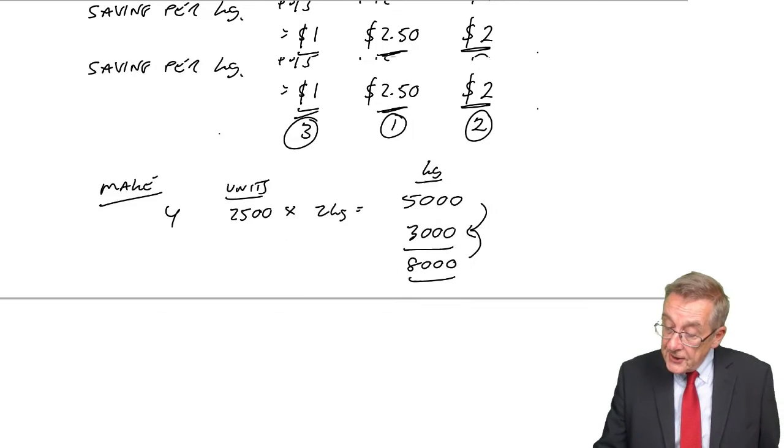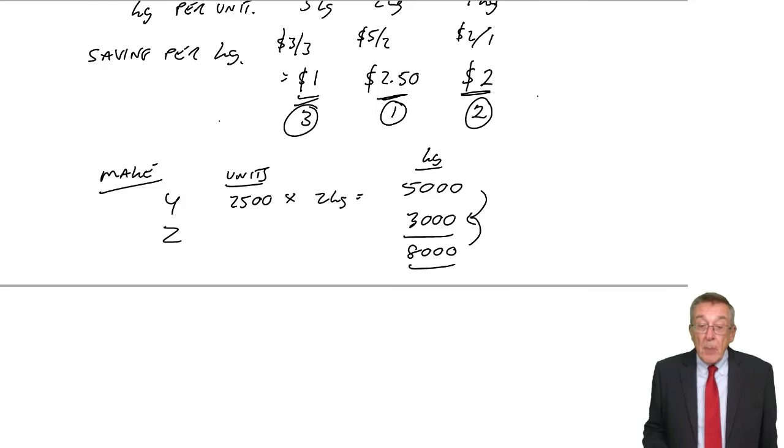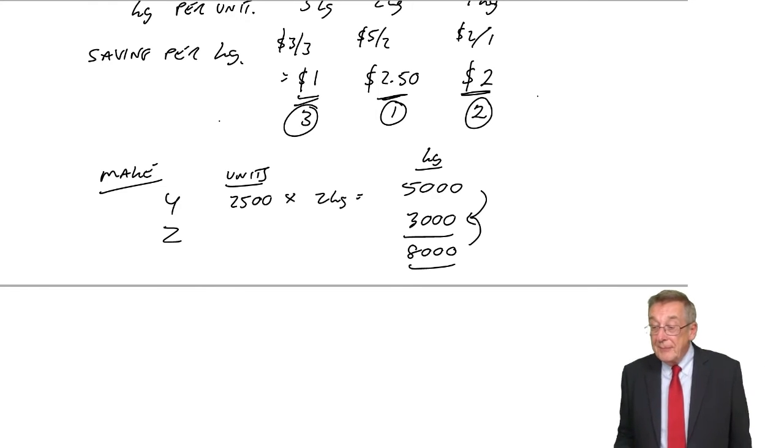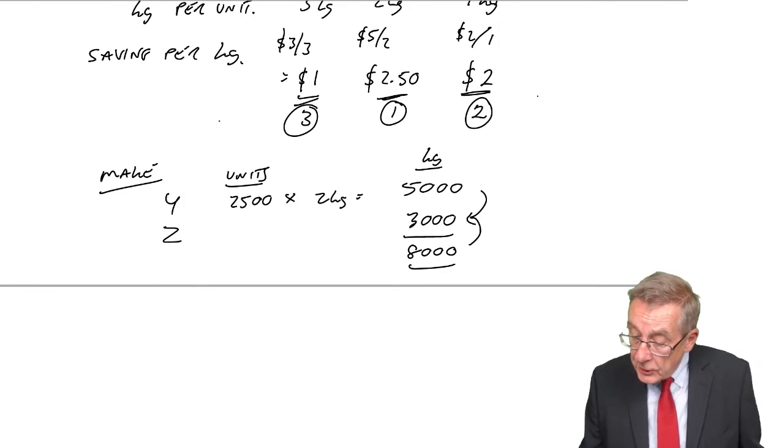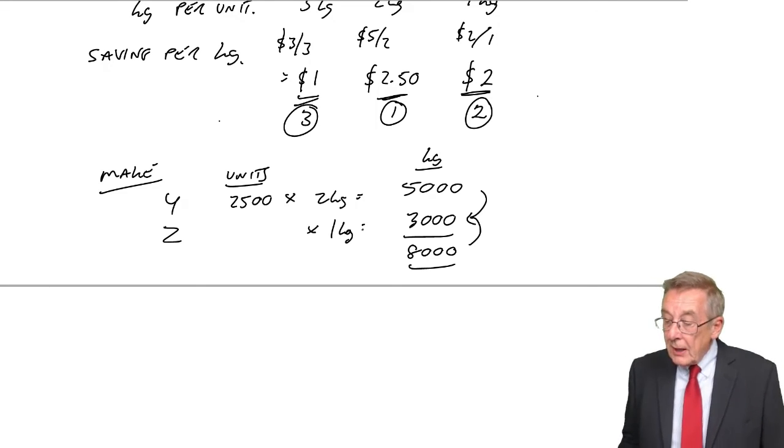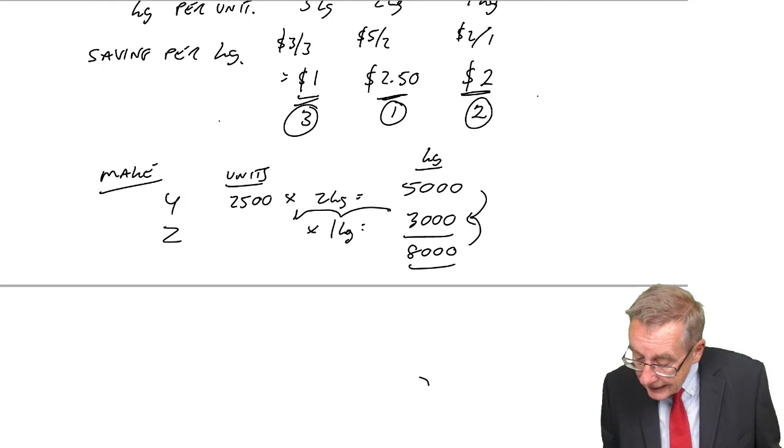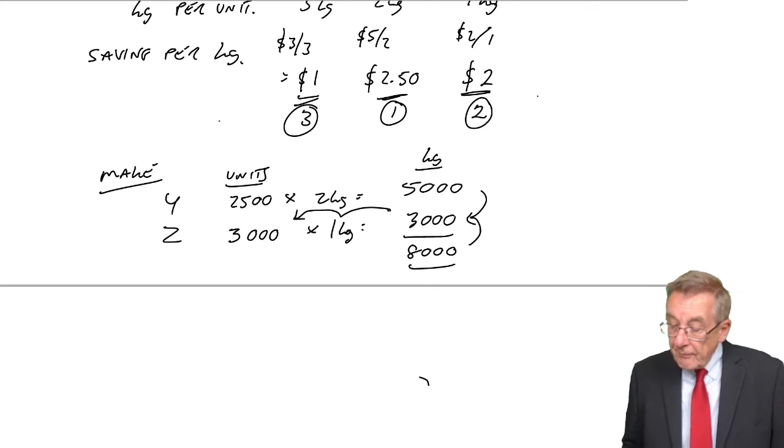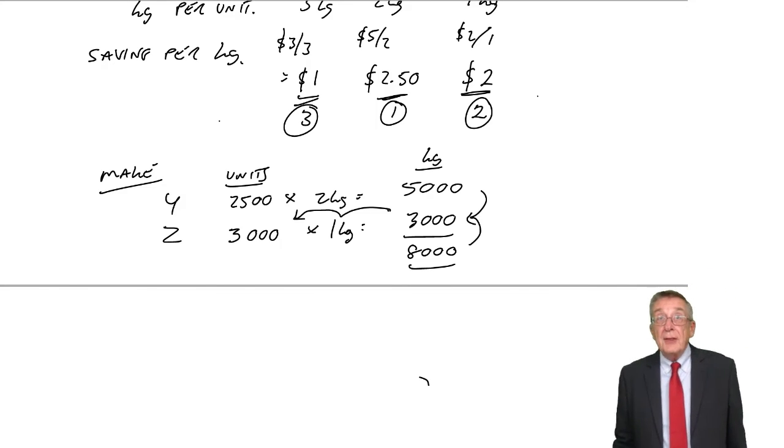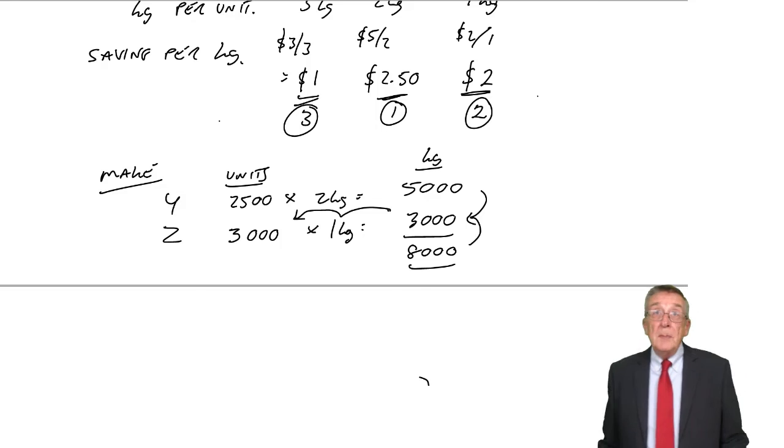So, go to the next best, which is Z. And how many Zs can we make? Well, remember, we'll never make more than 4,000 because we wouldn't sell them. But there's no way we could do that. Each one needs one kilo. And so, given we've only 3,000 kilos left, one kilo each, we'll make ourselves 3,000 units. That uses up all the material we've got.